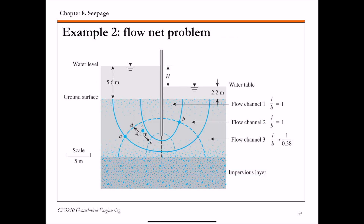This slide shows the flow net of example 2. This is a flow net around a row of sheet piles. You have upstream and downstream water tables given. The upstream water table H1 is 5.6 meters, and the downstream water table H2 is 2.2 meters. We're going to put the reference datum for total head at the ground surface.